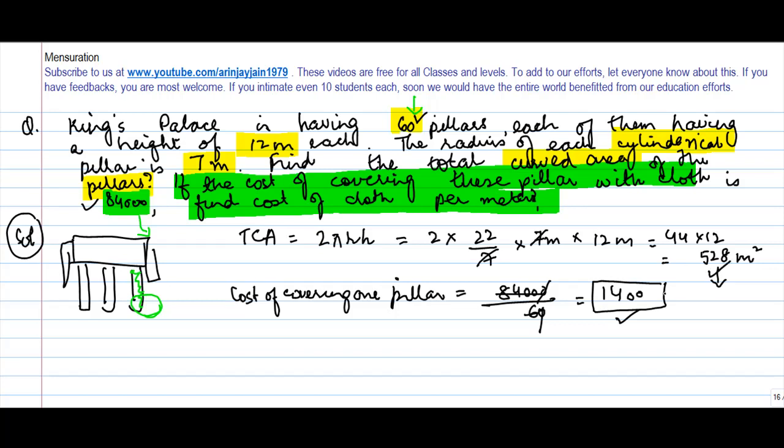So the cost of cloth per meter equals the total cost of one pillar divided by area, which is 1,400 ÷ 528. The numbers are complex, let's do the division.